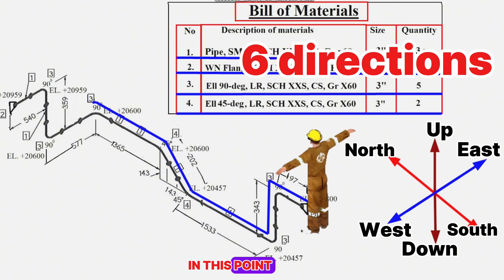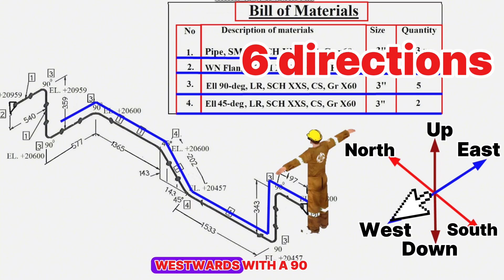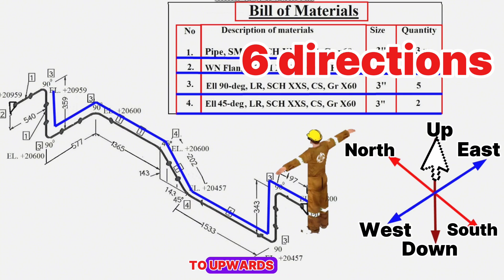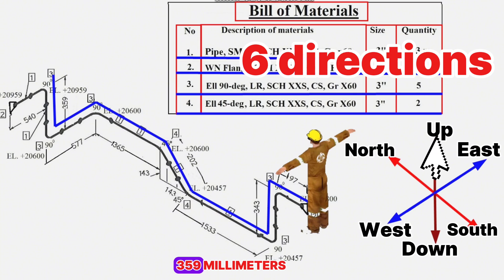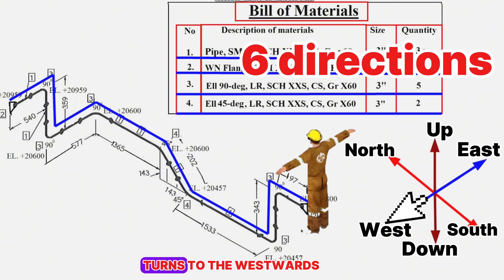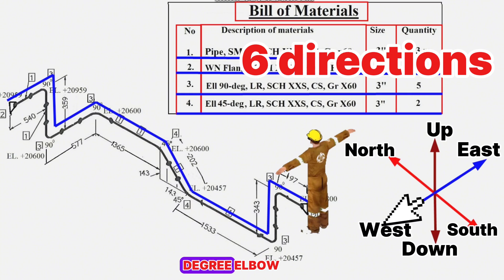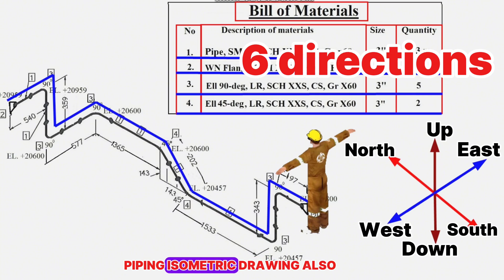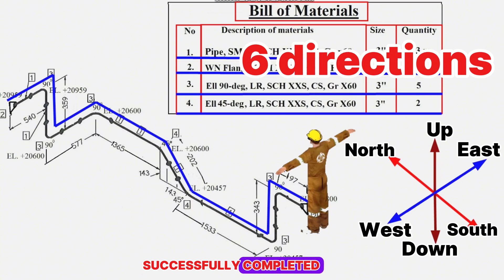At this point the pipeline turns westwards with a 90 degree elbow and continues 577 millimeters. Then the pipeline extends upwards again with a 90 degree elbow for 359 millimeters. Finally, the pipeline turns westwards again with a 90 degree elbow and continues 540 millimeters. Reading the piping isometric drawing is also successfully completed.